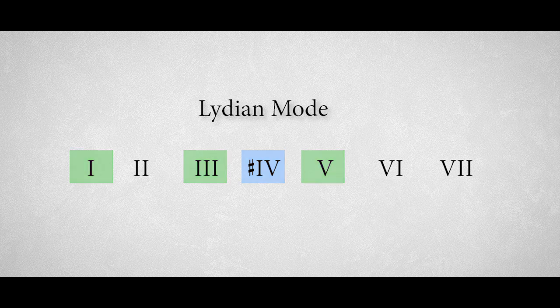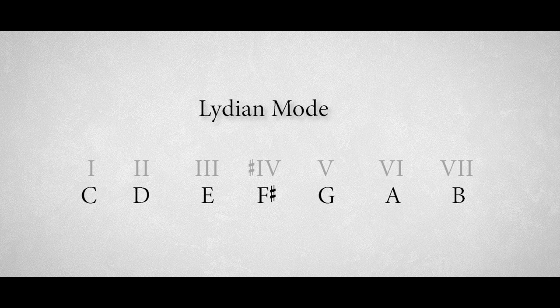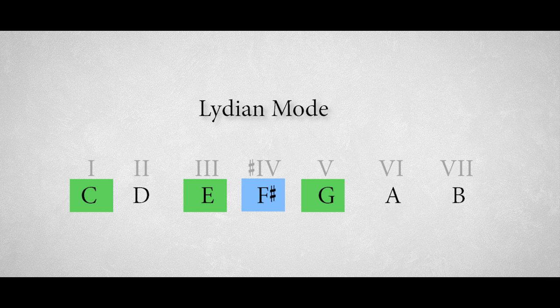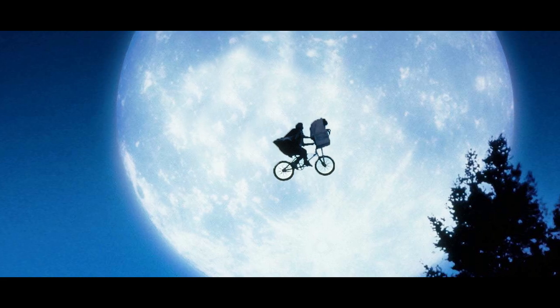For example in C Lydian the characteristic note for this mode is the F-sharp, which is the raised fourth note in the C Lydian scale. We could just add that specific note to our C major triad and there it is, the genuine lifting Lydian sound of which filmmakers across the globe are so extremely fond of.